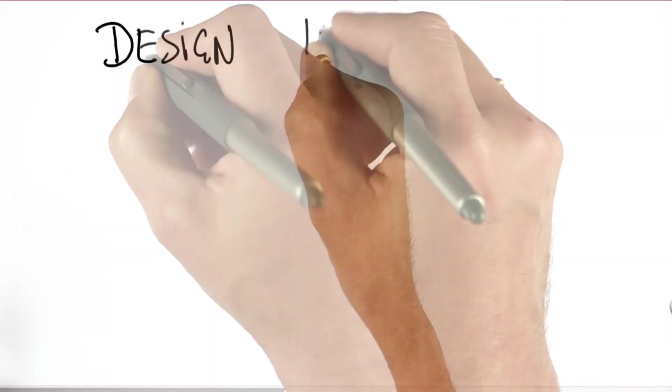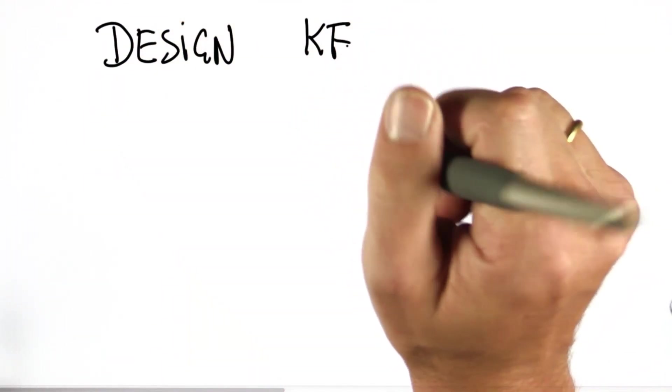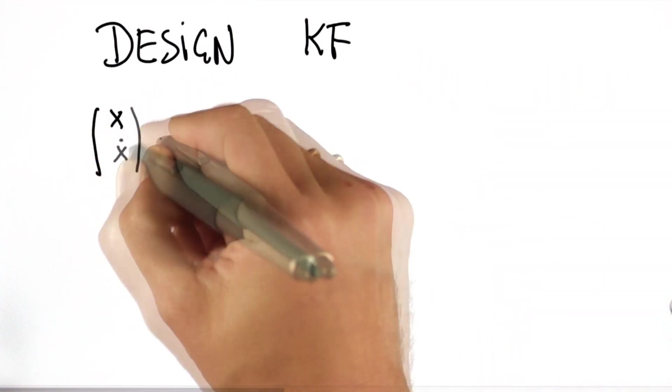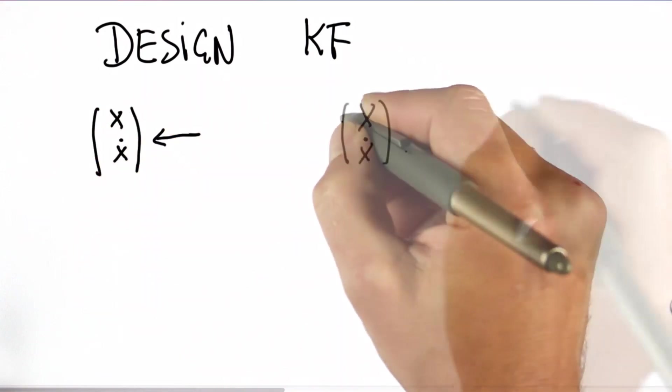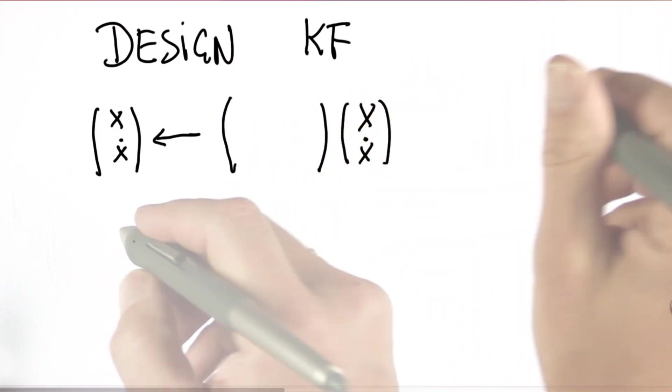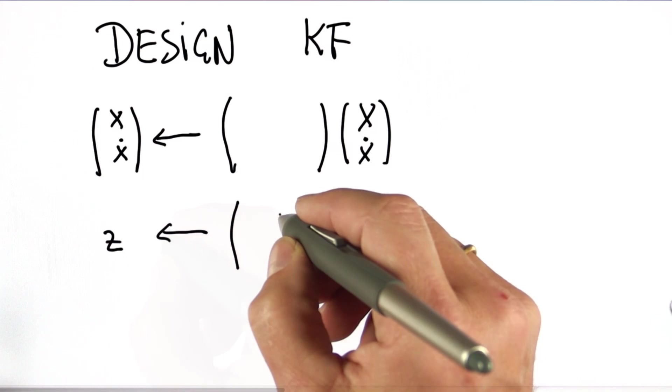So when you design a Kalman filter, you need effectively two things. For the state, you need a state transition function, and that's usually a matrix. So we are now in the world of linear algebra. And for the measurements, you need a measurement function.